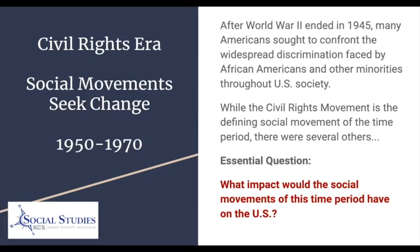While the civil rights movement is the defining social movement of the time period, there were several others — primarily of women and minority groups — all seeking to change the world in some way. That's what's meant by a social movement: an organized group of people trying to achieve a collective common end, trying to make improvements for their people. The essential question to consider as you move through these tasks is: what impact would the social movements of this time period have on the United States? What were they doing that changed America and sought to make it more equal?